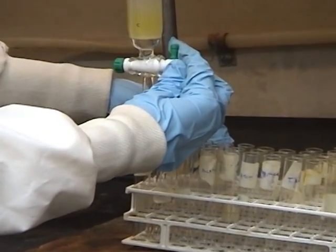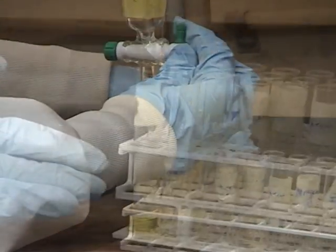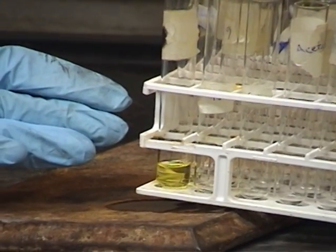Once the sample is loaded, you are able to begin collecting fractions into test tubes. If your samples are colored, it is easy to see the progress of the samples down the column.